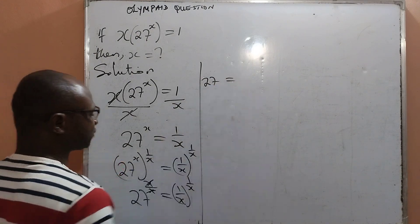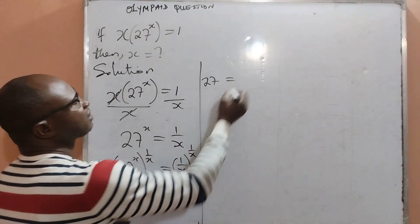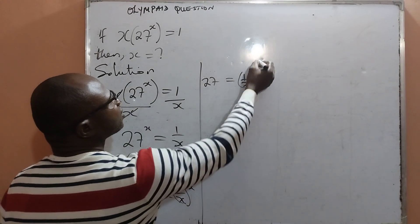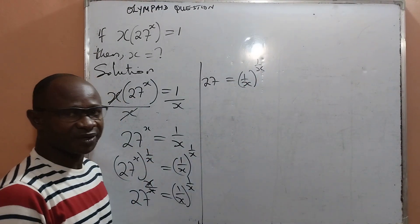And from the left, I am just left with the 27, and by the right hand side I have 1 all over x to the power of 1 all over x.